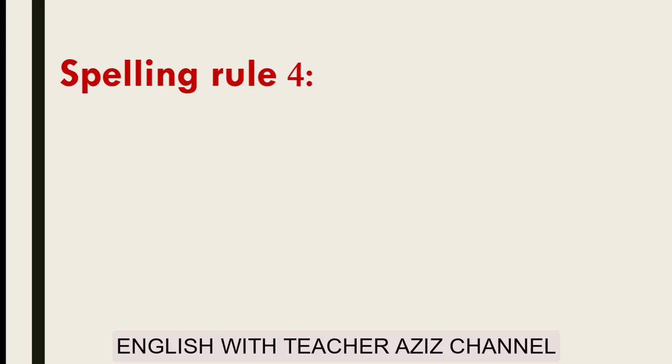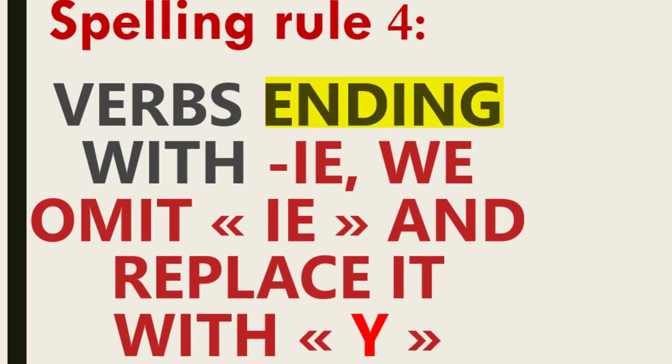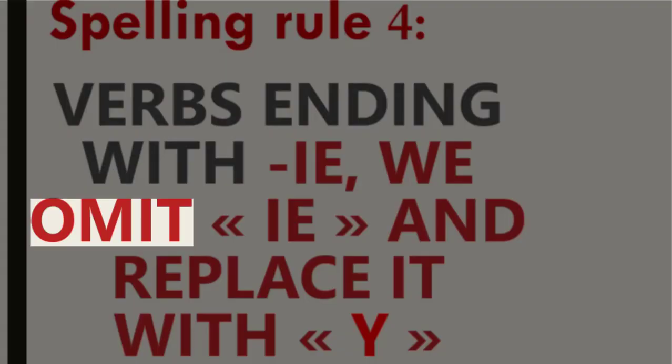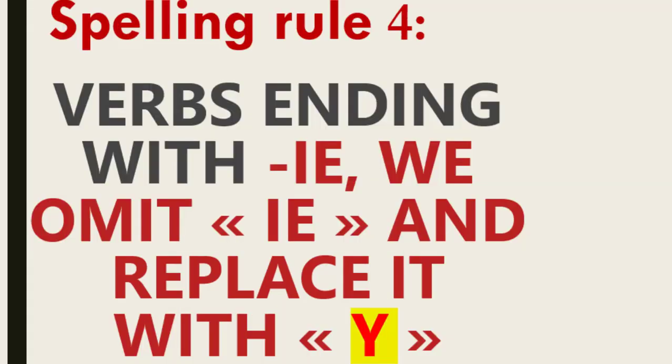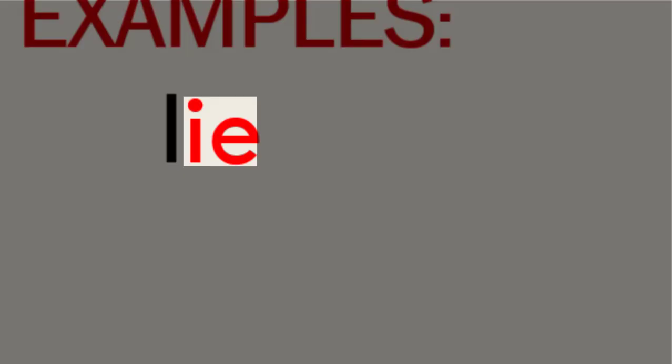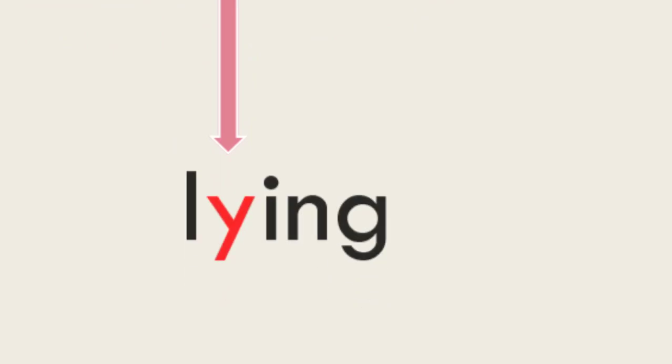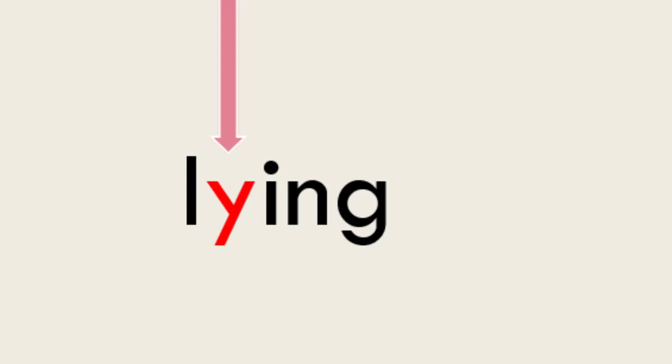Spelling rule 4: verbs ending with IE — we omit IE and replace it with Y, then add -ing. For example, the verb 'lie': the last two letters are IE, so IE changes to Y, then we add -ing: lying.